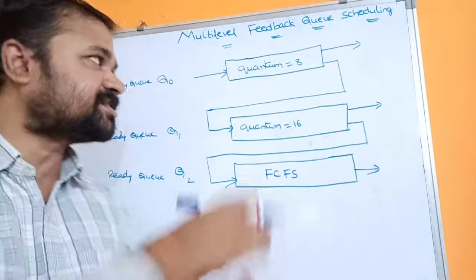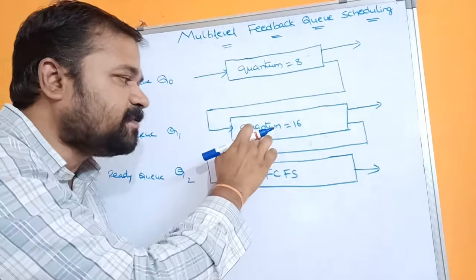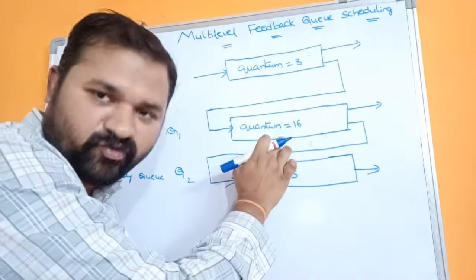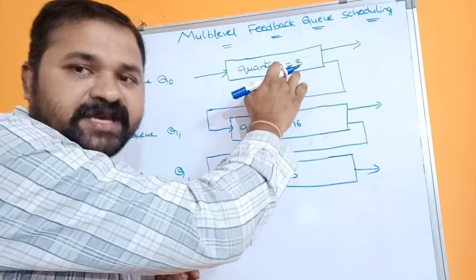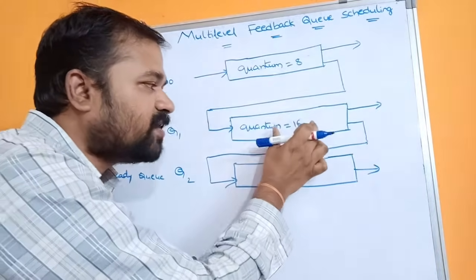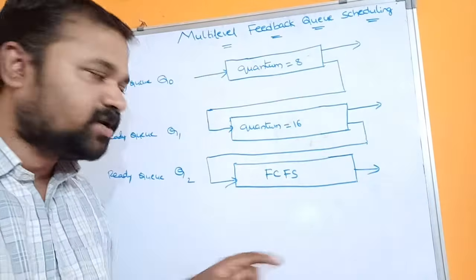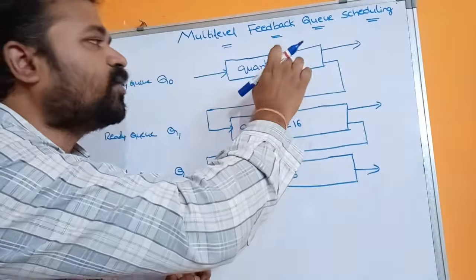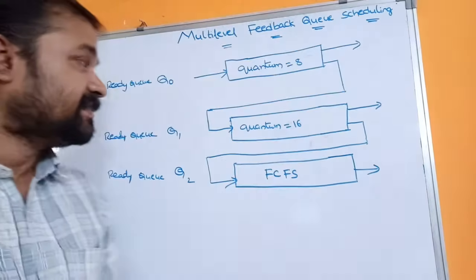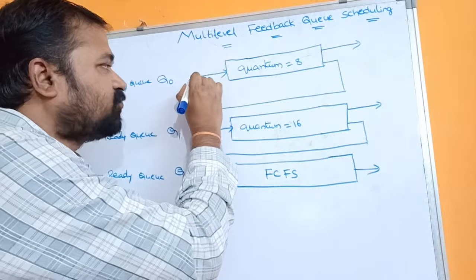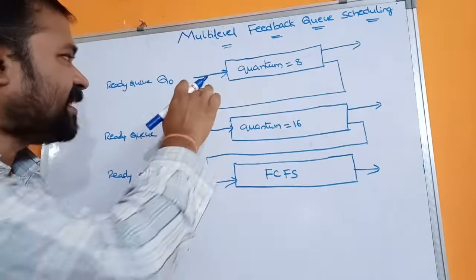First, the CPU executes all processes in ready queue Q0. Once all processes in Q0 are done, the CPU starts executing processes in ready queue Q1. The CPU executes processes in Q1 only when the Q0 ready queue is empty. Similarly, once all Q1 processes are done, the CPU executes Q2, but only when both Q0 and Q1 are empty. Whenever a new process arrives, it is placed in ready queue Q0.